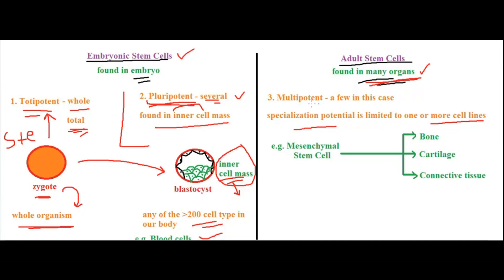So multipotent—multi means many, right? But in this case, you have to remember that multi is few. Let's compare it with pluri. Pluri is more, and multi is comparatively less. So in this case, multi means a few cell types.